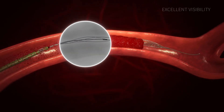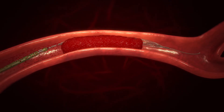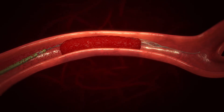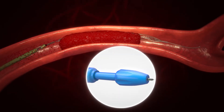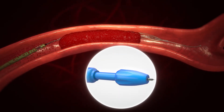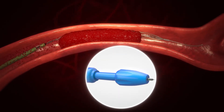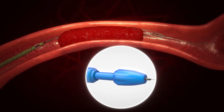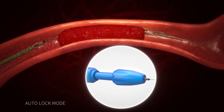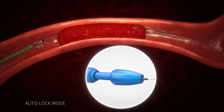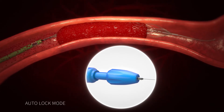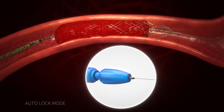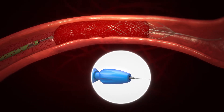The operator can precisely adjust the net diameter by manipulating the handle to ensure optimal clot retention and prevent collapse in tortuous anatomy during retrieval. The Auto-Lock mode allows fine-tuned incremental diameter changes to secure the clot.